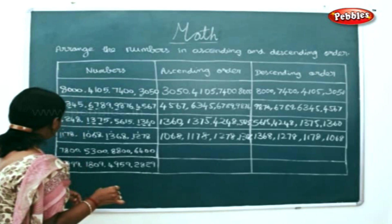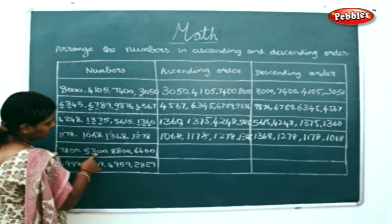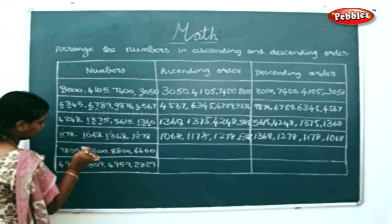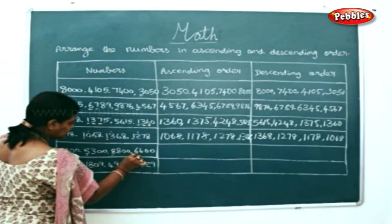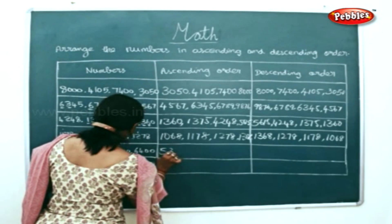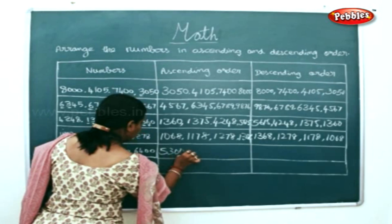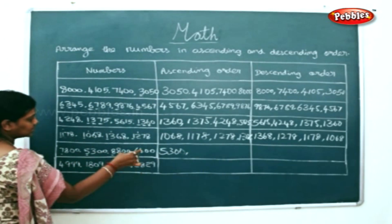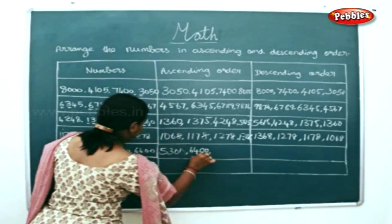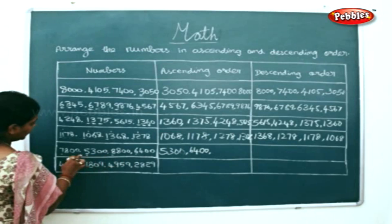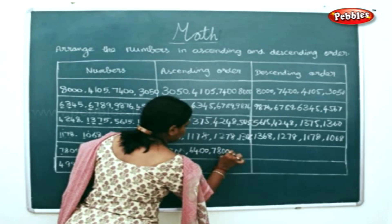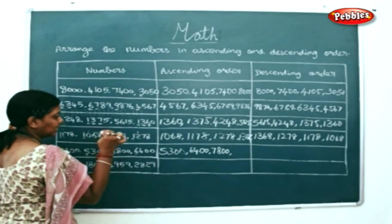The next sum: 7800, 5300, 8800, 6400. We start checking the thousands places: 7, 5, 8, 6. So, 5 is the lowest number — 5300. The next will be 6400. The next will be 7800. And the highest number will be 8800.